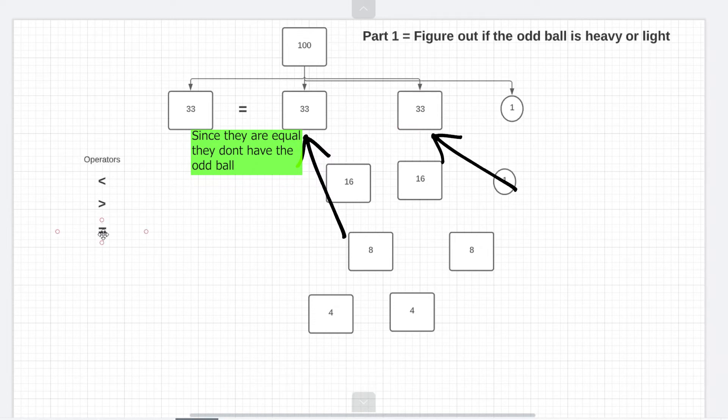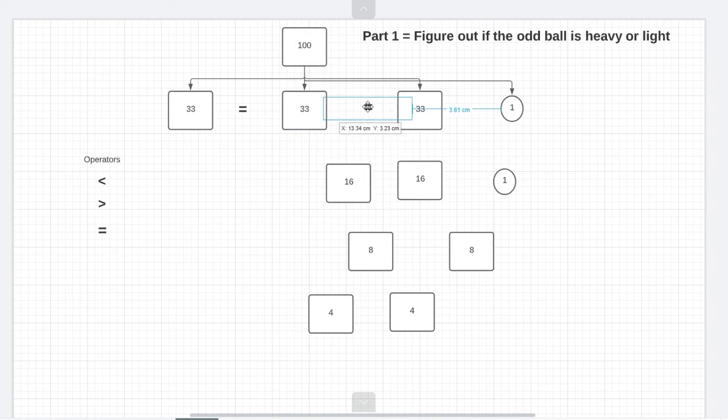Now if these two are also equal this would give rise to our best case scenario and the best case scenario is none of the three groups had the odd ball which automatically makes the ball which we kept aside in the beginning our odd ball. So hence by just doing two comparisons you were able to find out the odd ball. Now this is our best case scenario.